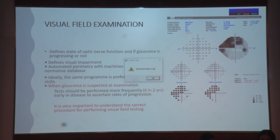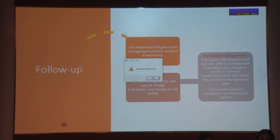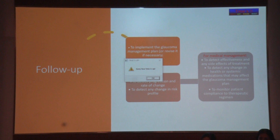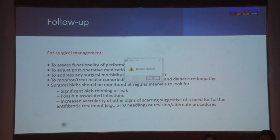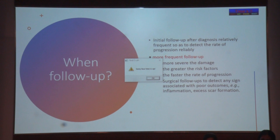When glaucoma is suspected or diagnosed, tests should be performed more frequently. In the initial first two years, at least six visual field tests are recommended to ascertain the baseline and rate of progression. It is very important to understand the correct procedure for performing visual field testing. In follow-up, since glaucoma is a chronic progressive disease with lifelong management, the aim of follow-up is to implement the glaucoma management plan, detect progression and rate of change, monitor drug efficacy and compliance in medical management, and assess surgical procedure functionality and adjust post-op medication. Initial follow-up should be more frequent. Frequent follow-ups are recommended for more severe damage, greater risk factors, and faster rate of progression.